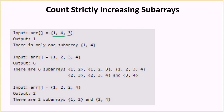Suppose we are given the array [1, 4, 3]. Here we have just one sub-array which is in strictly increasing order: [1, 4]. The sub-array [1, 4, 3] is not strictly increasing because 3 is less than 4, and [4, 3] is also not valid. So there were only three possibilities and only one is valid — that is why [1, 4] is the only sub-array.